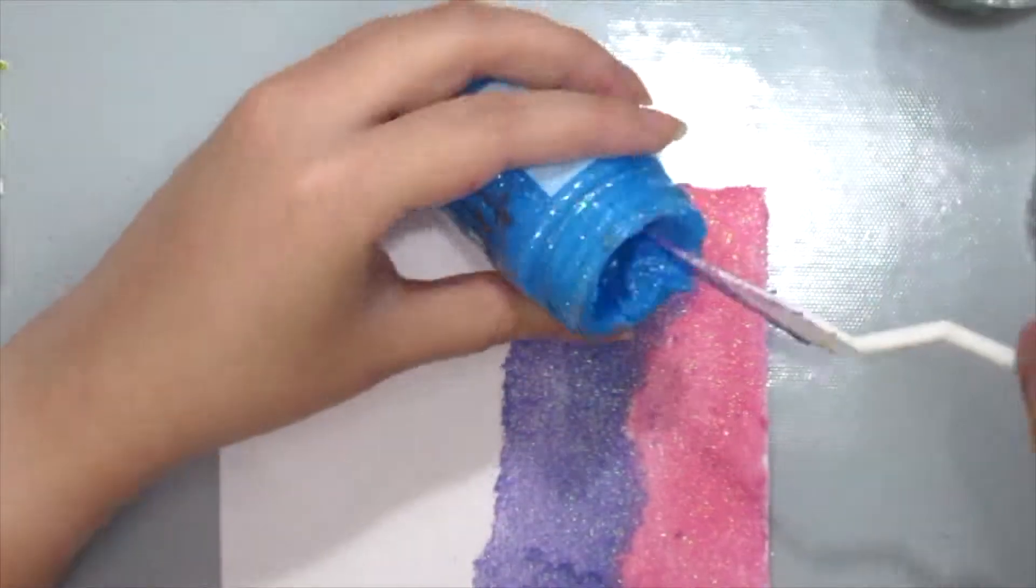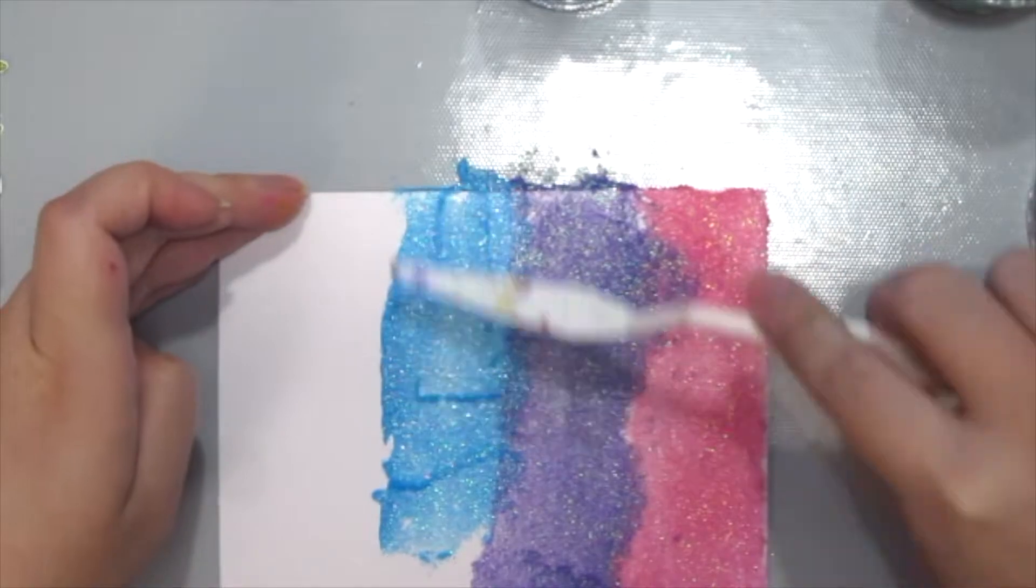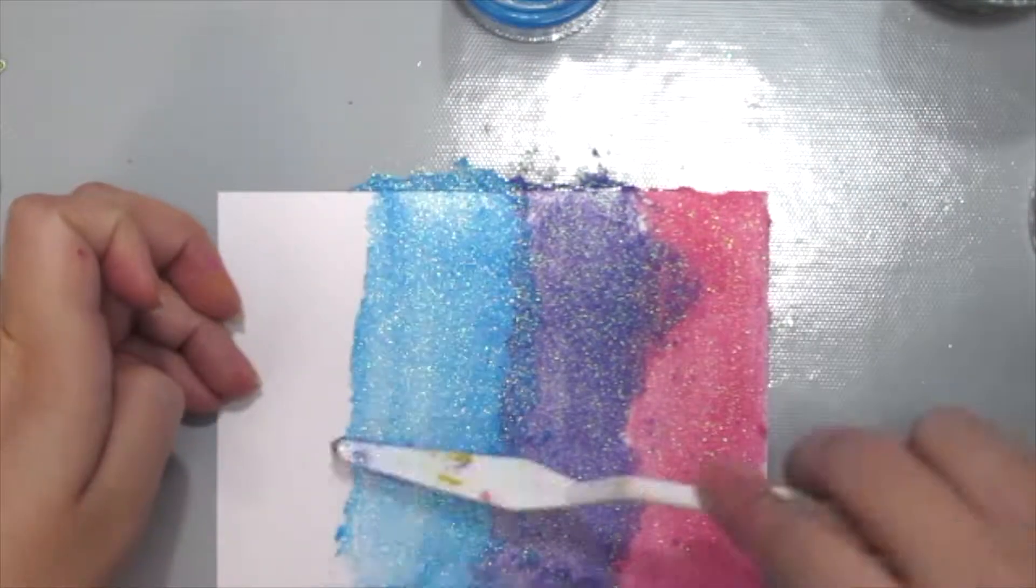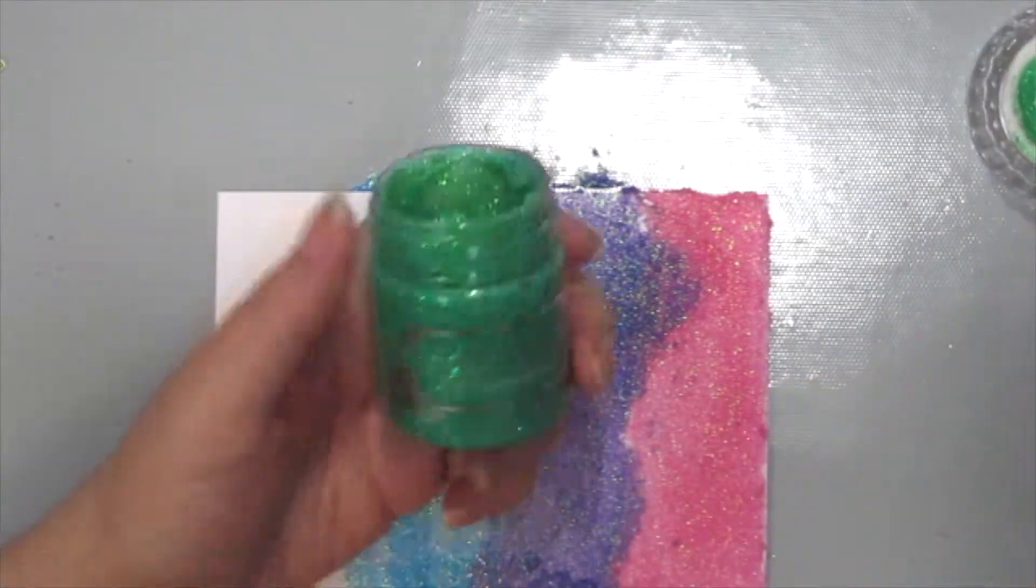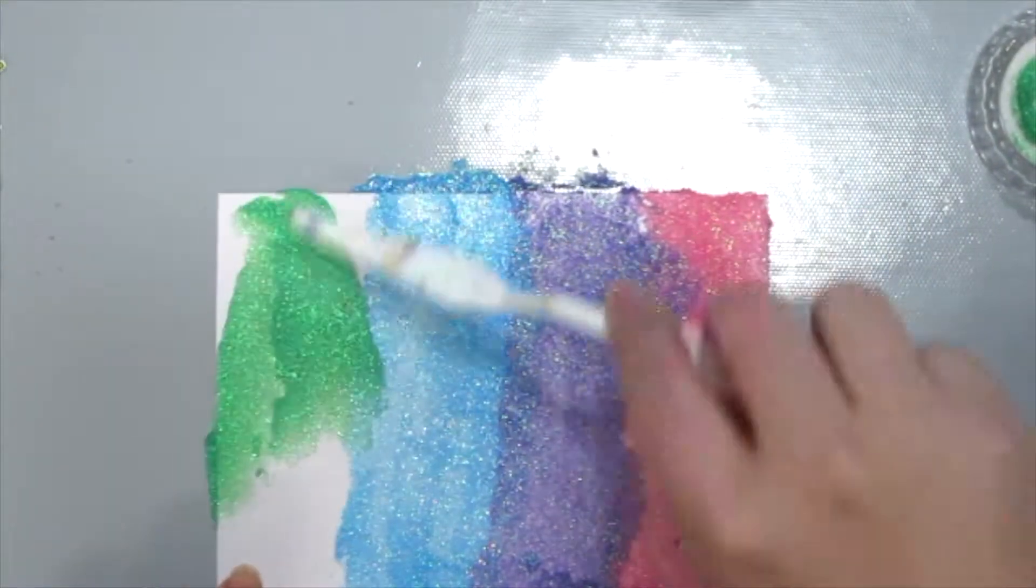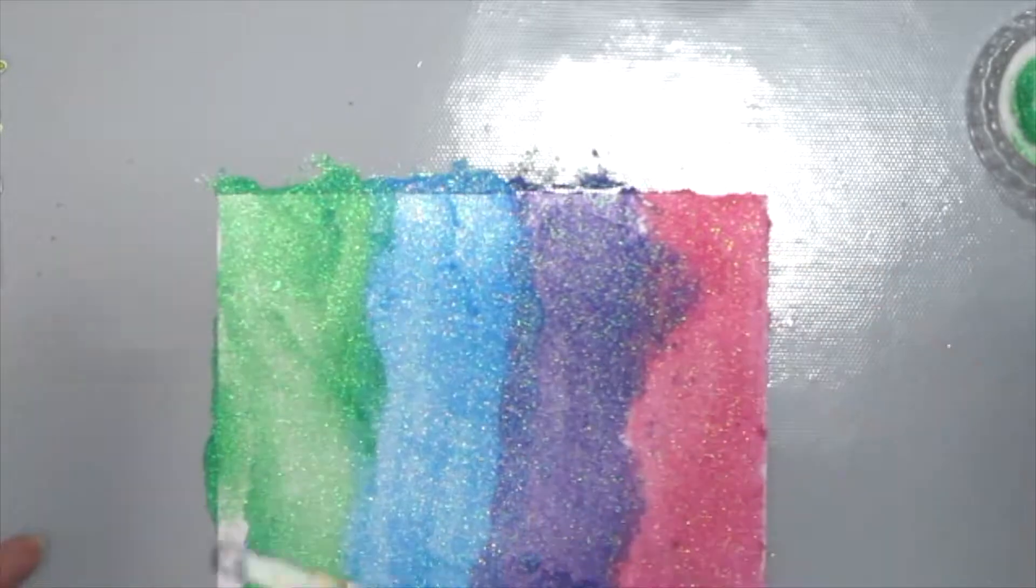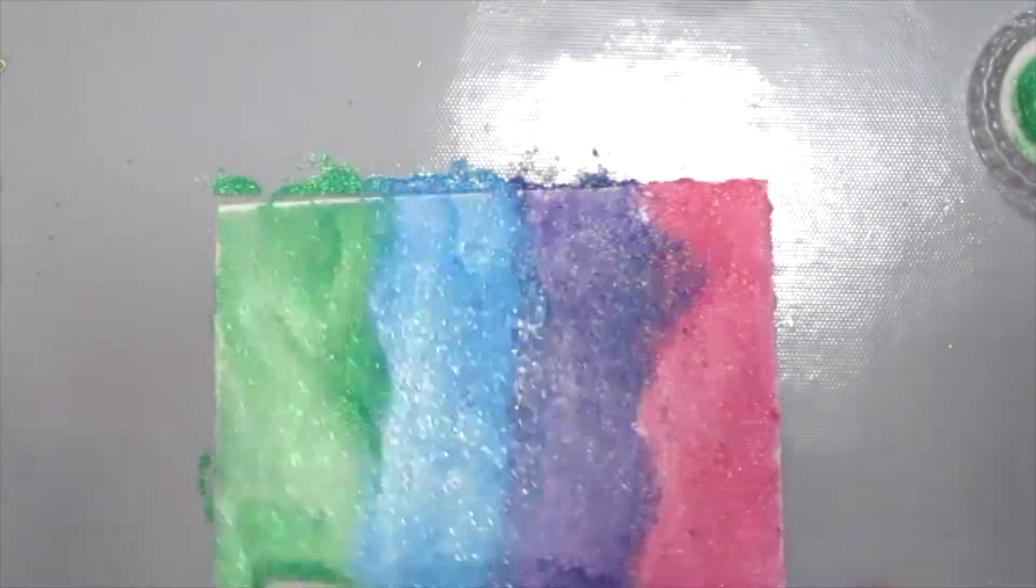For the next layer I'm using the color blue topaz and then I am ending it with the peridot green, which is a really nice green. I guess all colors are really nice. Anything sparkly and glittery I love it.